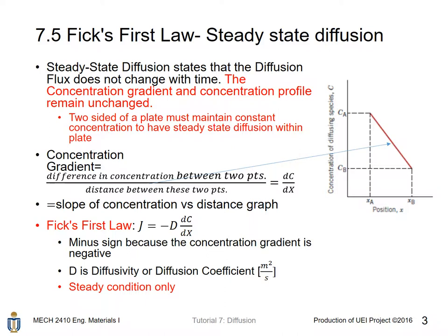...that means the concentration gradient is not constant and therefore steady-state diffusion won't happen. Concentration gradient is defined as difference in concentration between two points over distance between these two points.